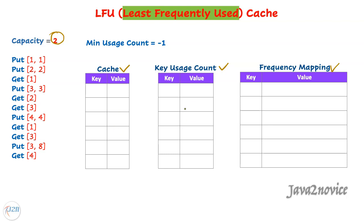If we know the key, we will get its usage count from this map and then identify which linked list it is part of. Now, how do we know the least usage count at any given point of time? We need to keep track of it. This variable, min usage count, will hold the least frequently used count at any given point of time.